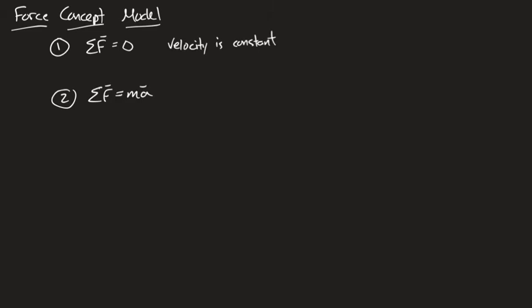Students believe that moving means that the forces are unbalanced, and that's not what's being said. An object can be moving and still have balanced forces. When you're driving on a highway at 50 miles an hour, the forces are still balanced on your car — friction, air resistance, the force of the road, the force of the engine — they're all balanced. The only time forces are unbalanced is when your object is accelerating. If an object is accelerating, it's a second law problem.